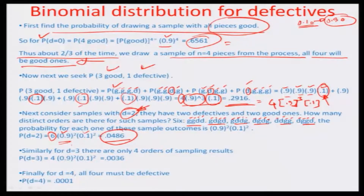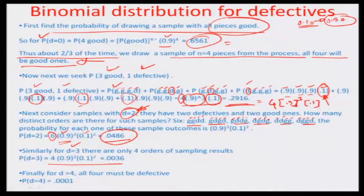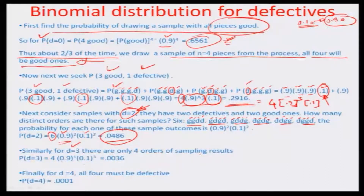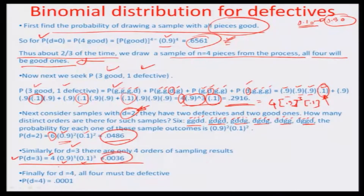For d equal to 3 — three defectives and one good — there are 4 orders of sampling results, so the probability is 4 times 0.9 to the power of 1 times 0.1 to the power of 3, giving 0.0036. Finally, for d equal to 4, all 4 must be defective, so the probability is 0.1 to the power of 4, which equals 0.0001.